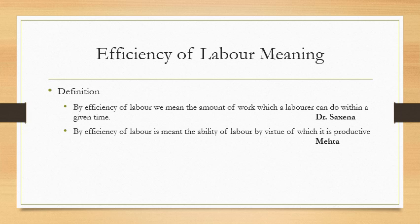Number one, the quantity or amount of product made by a worker. Number two, the quality of the product produced by a worker. And number three, the time spent by a worker in producing that product.